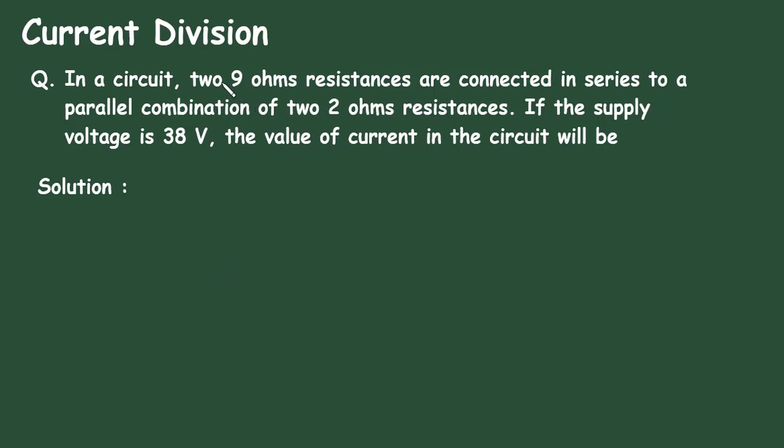So first of all, two 9 ohms resistances are connected in series. Let's draw the circuit. This is 9 ohm resistance and this is also 9 ohm resistance. They are connected in series with parallel combination of 2 ohm. So this will be of 2 ohm, also this will be of 2 ohm.